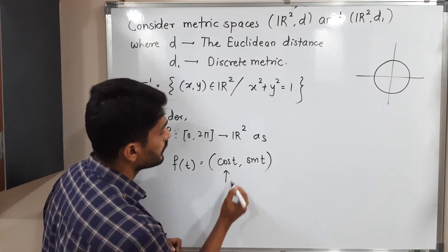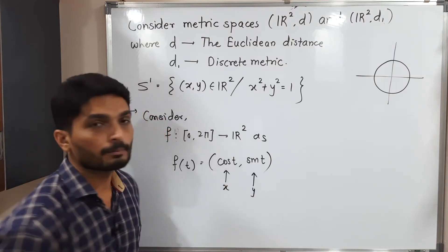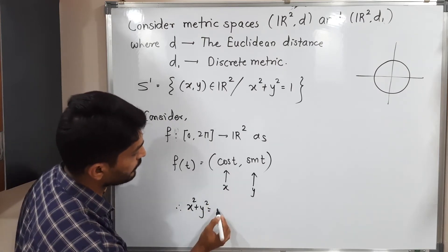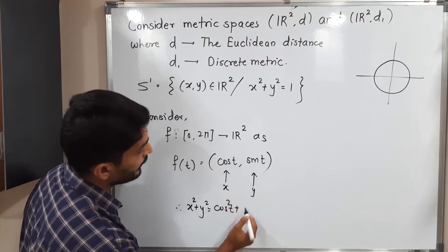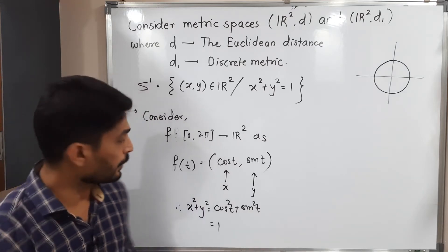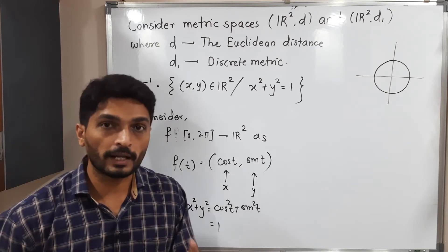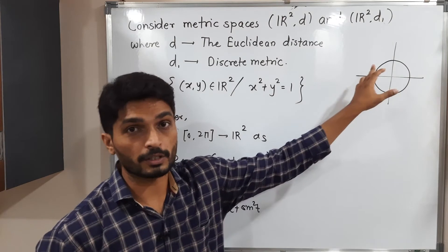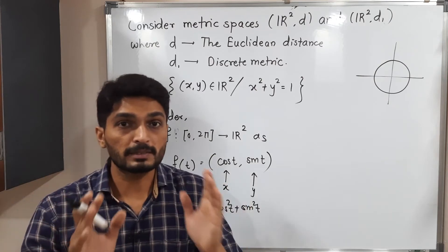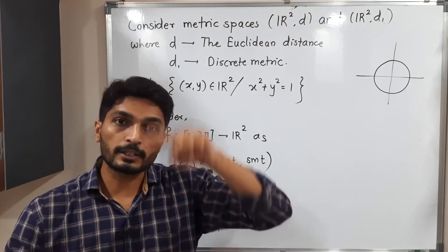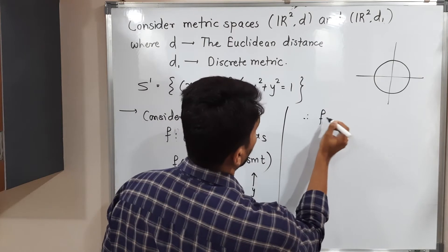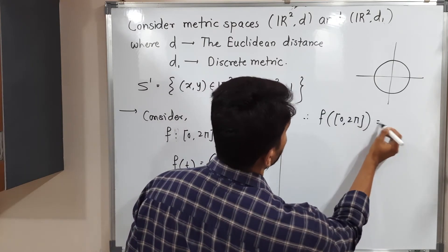What is the X-component? X = cos T. What is the Y-component? Y = sin T. So X² + Y² = cos²T + sin²T = 1, since we know that cos²θ + sin²θ = 1. Therefore X² + Y² = 1, which means the image set of F satisfies this equation. The domain is the closed interval [0, 2π], meaning the angle T ranges from 0 to 2π, giving a complete circle. Therefore, the image of [0, 2π] under F is S1.